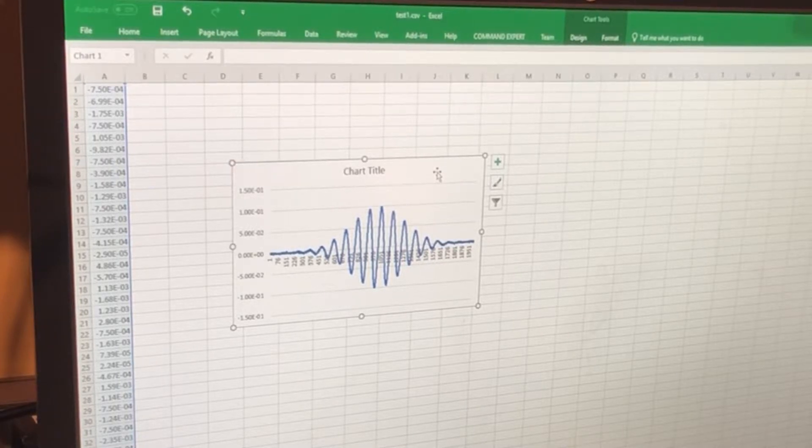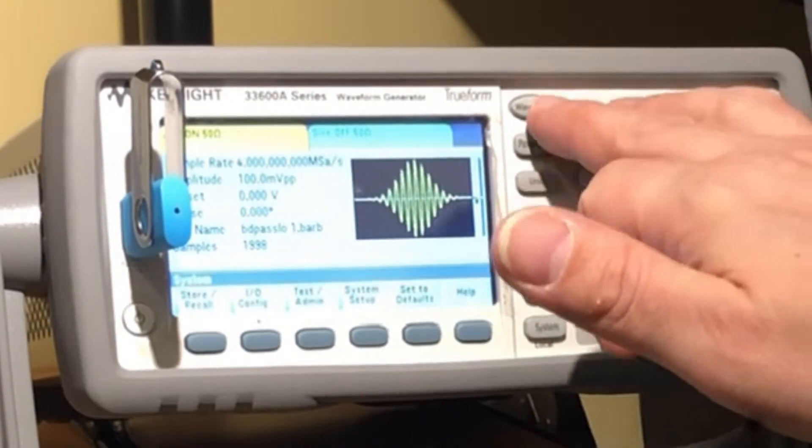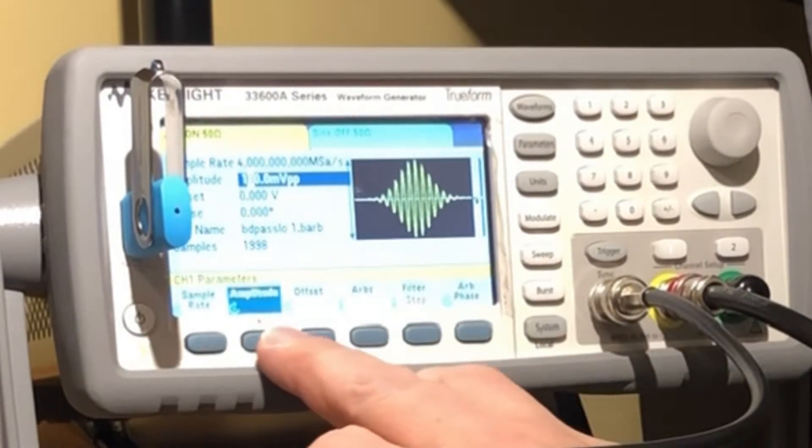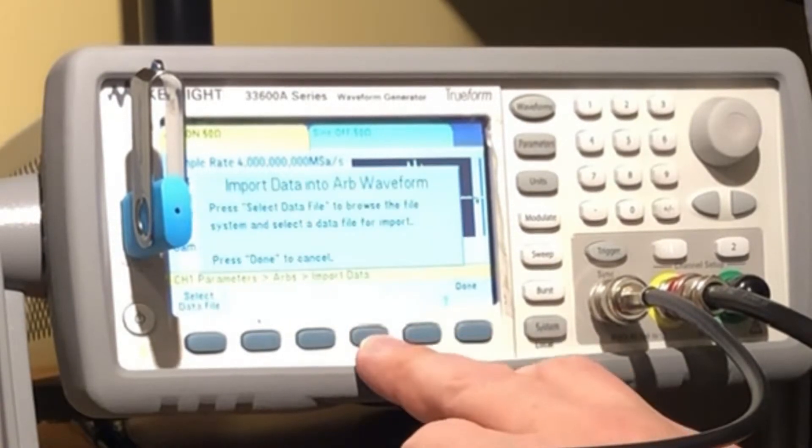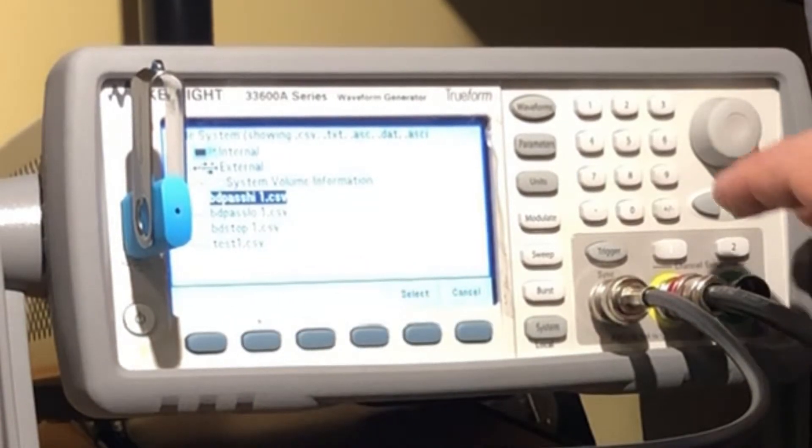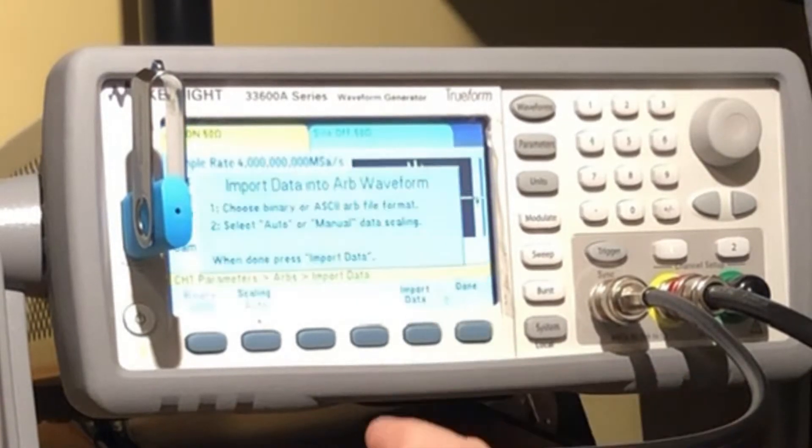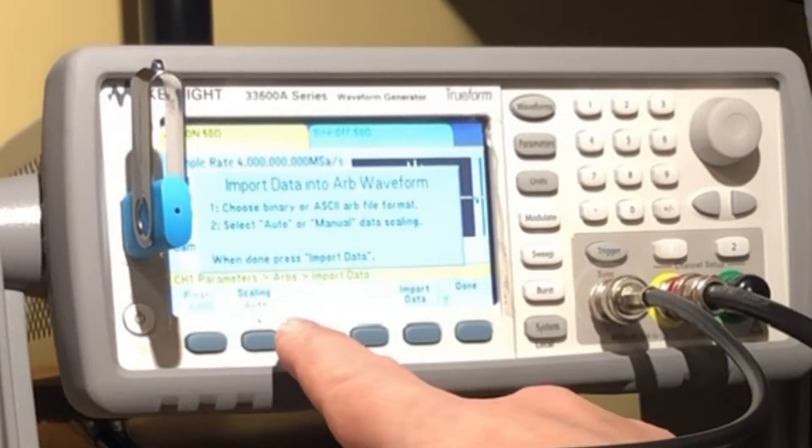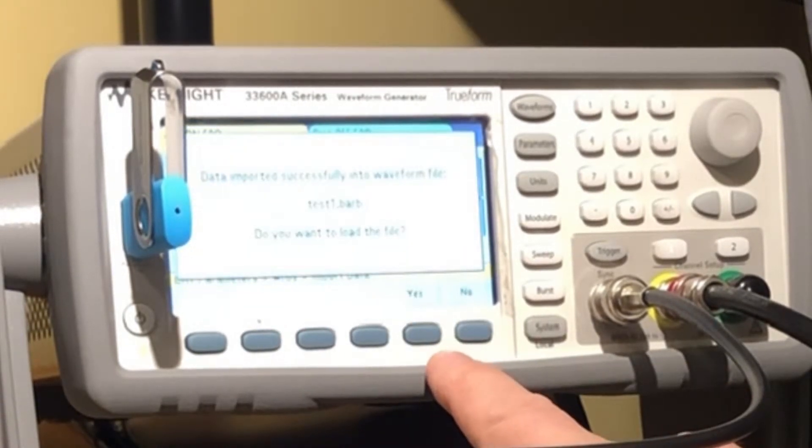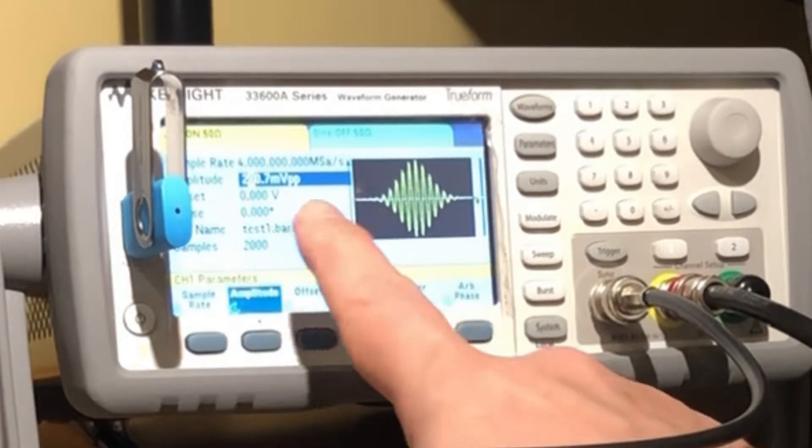And that's it, raw data. We go system, sorry I did it wrong. There we go, arb, arb import data, select data file. We got our test one there. Go down there, I'm going to go select. It's going to ask us, do we want a binary? Yes we do. Scaling auto, import data, sure, load the file, yes I do. And then I can make my adjustments here.